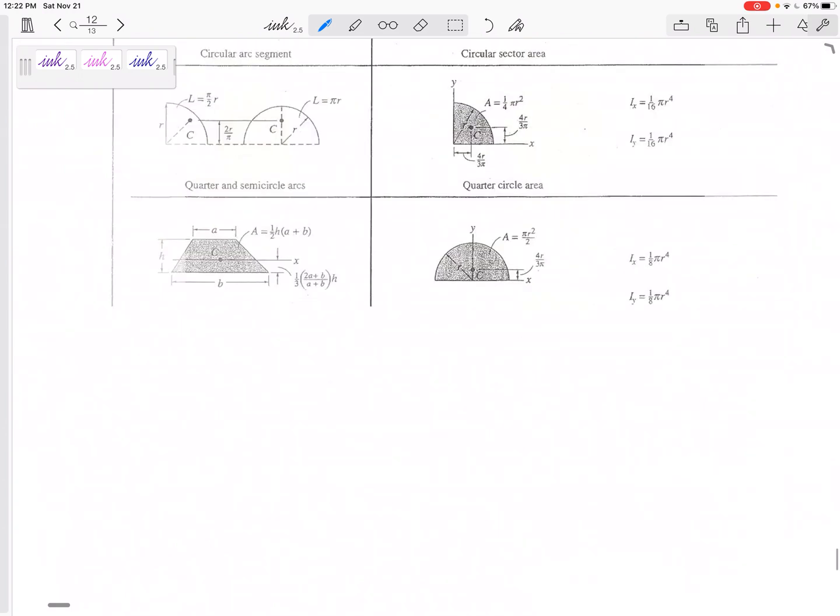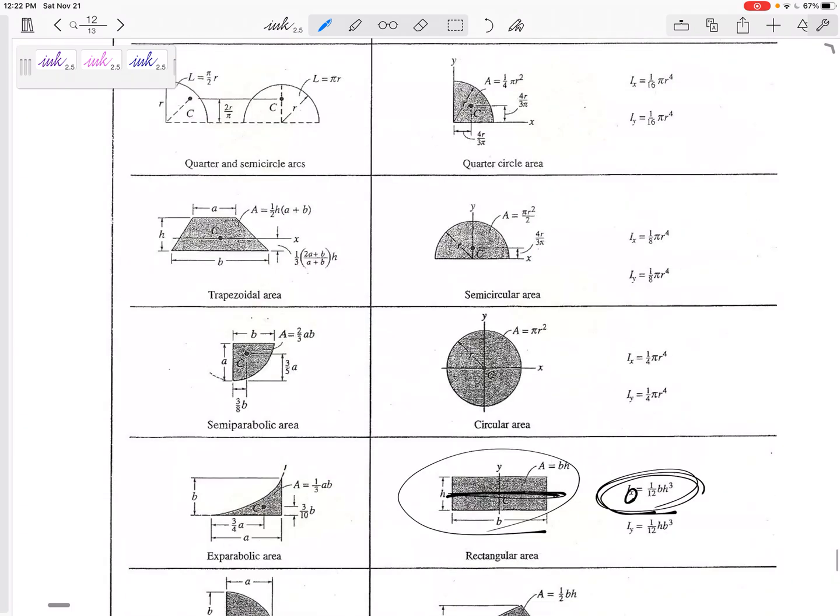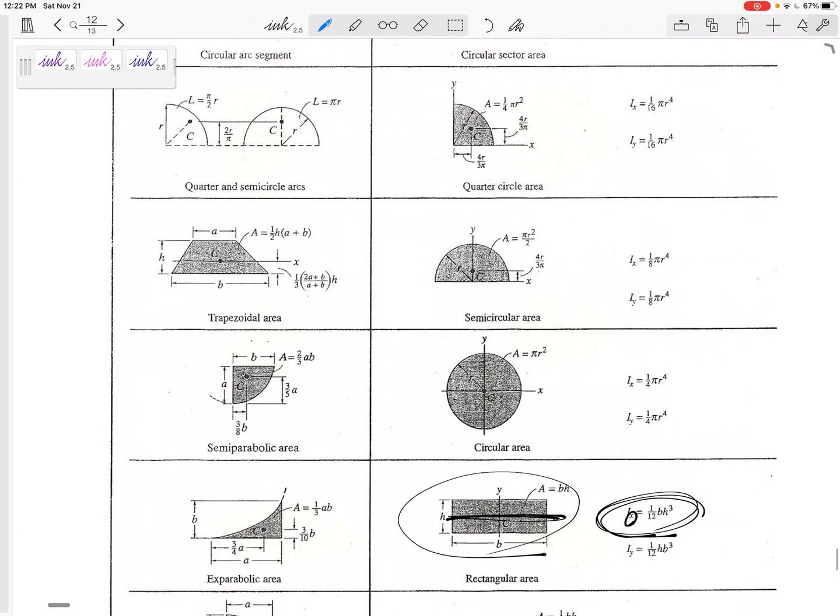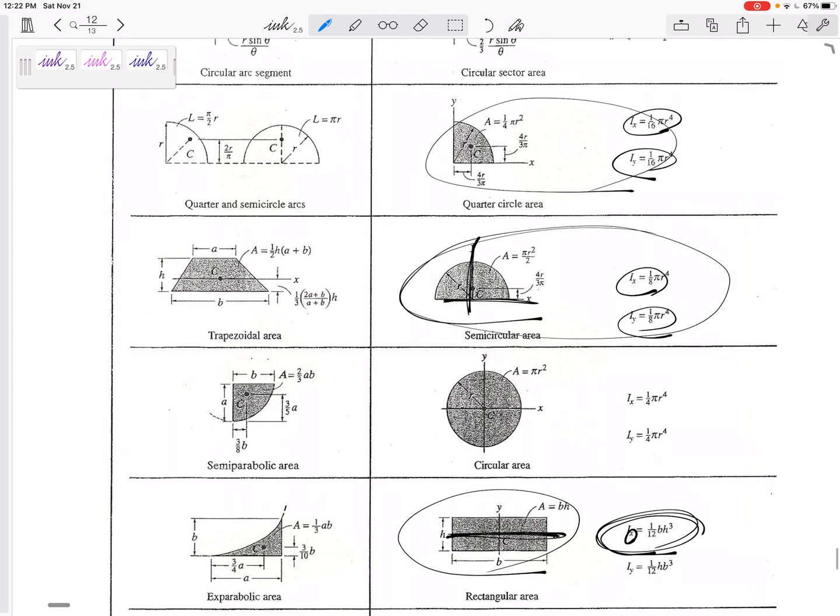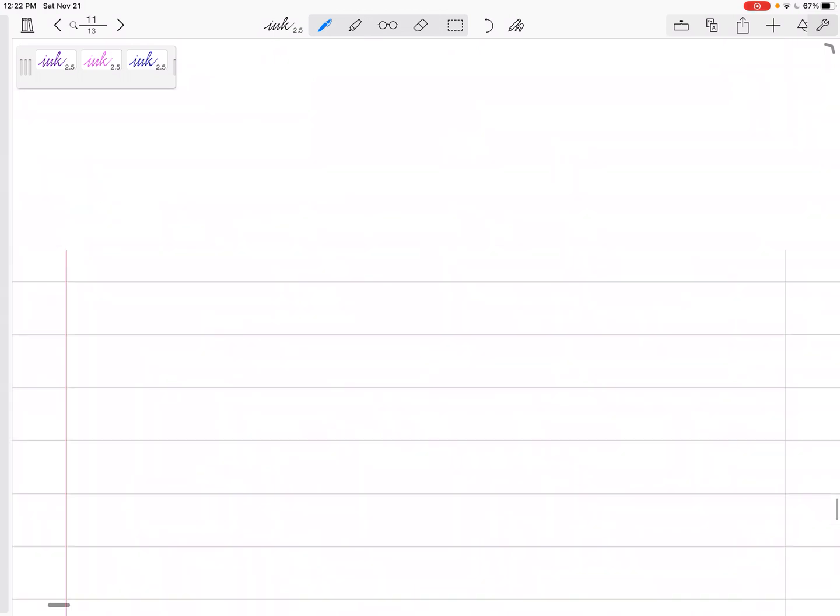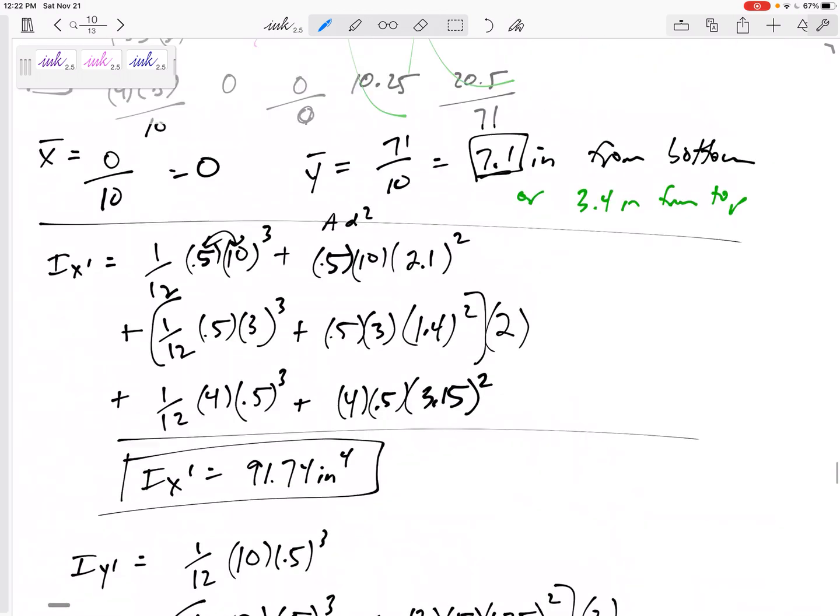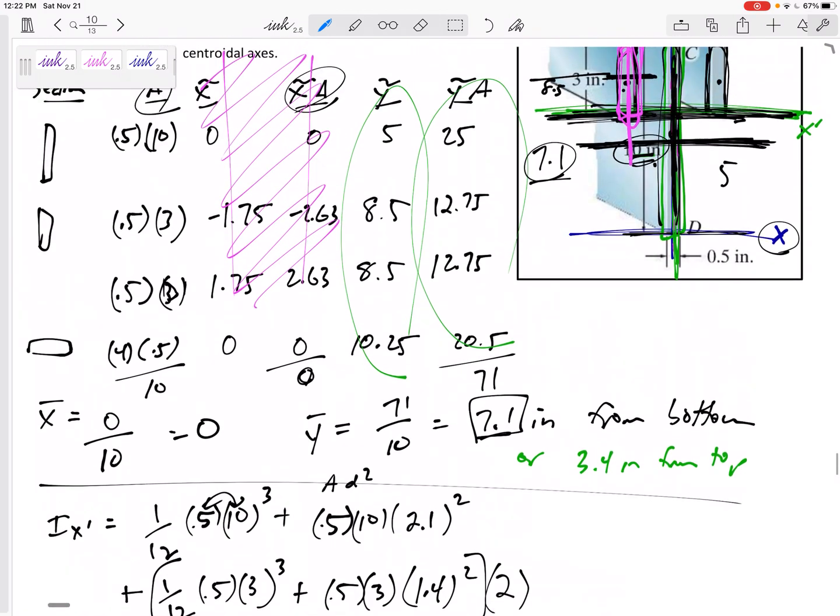And one thing, do be ready for—you don't see it in this problem, but do be ready for finding the centroid of a semicircular area or quarter circle area. And also note the I about these and where they are measured from. All right, so be ready for that even though it's not on this figure. And then finding the I...